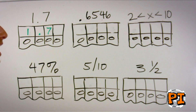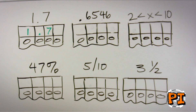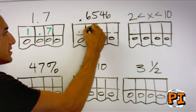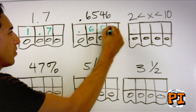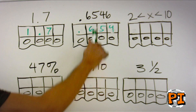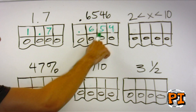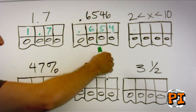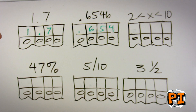Let's say you had a question where the answer was .6546. You've got more numbers than you have spaces. Again, you start off at the left and write .654. Whether you write a 4 or a 5, it doesn't matter. You don't have to round up or round down. Just lop it off, bubble it in, and move on.